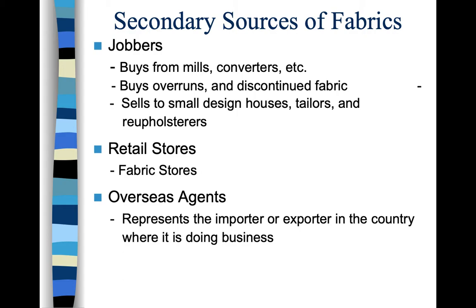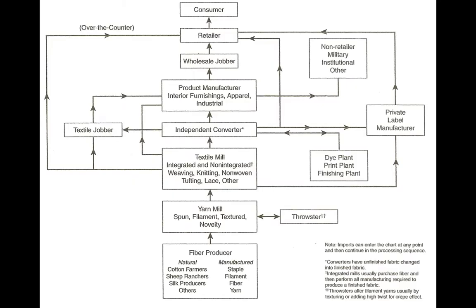There are also overseas agents as a secondary source. An overseas agent represents the importer or exporter in the country where they do business — they're a middleman representing the mill or the purchasing company. This person is not working for free, so it costs you more. Secondary sources of fabric are generally more expensive because there are more people in the line between you and the original maker.